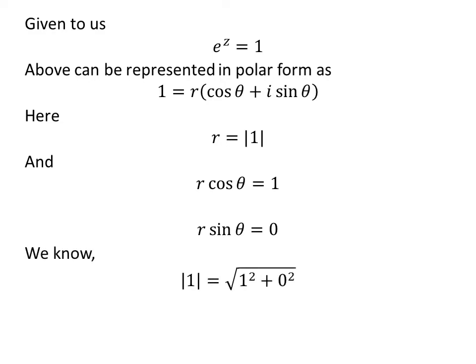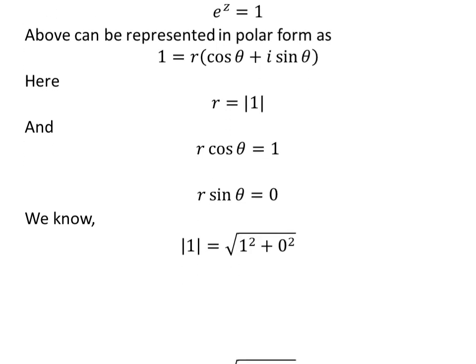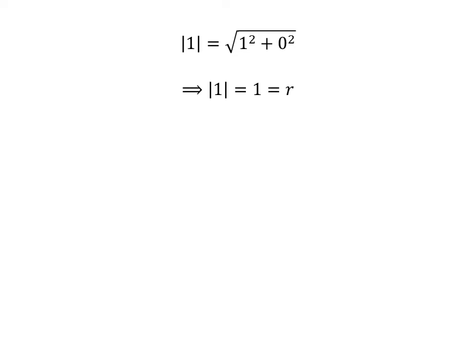As per the definition, modulus of 1 is equal to square root of the square of 1 plus the square of 0. This implies modulus of 1 is equal to 1, which is equal to r. As we know, r times cosine of theta is equal to 1, so cosine of theta is equal to 1.